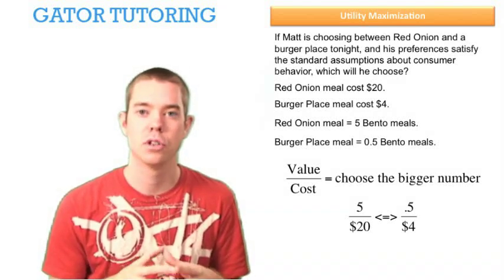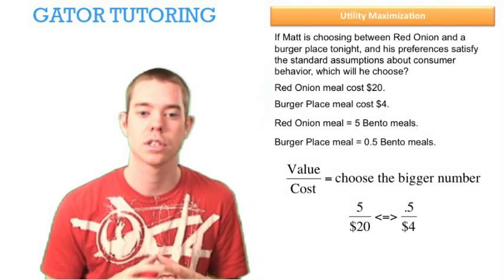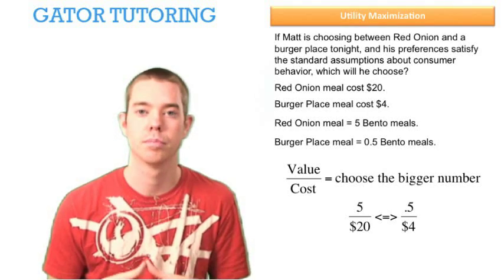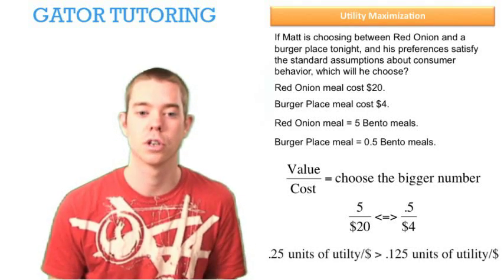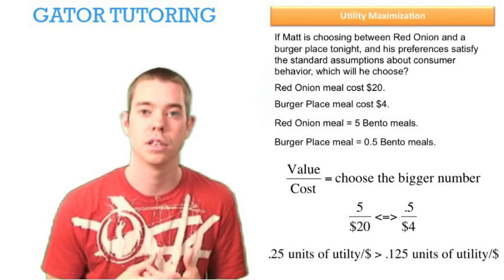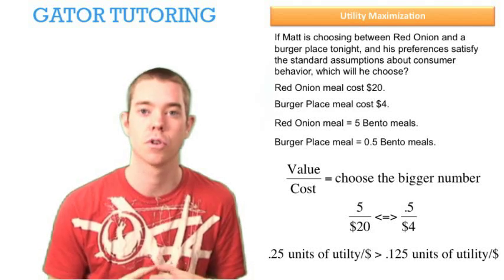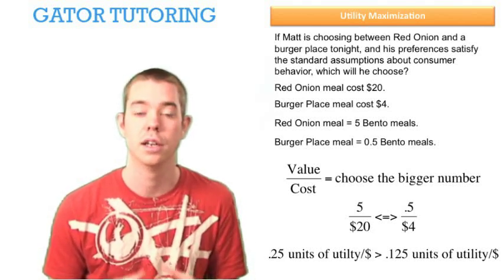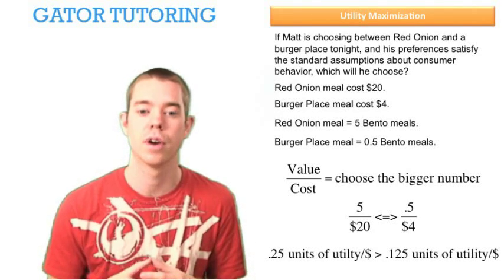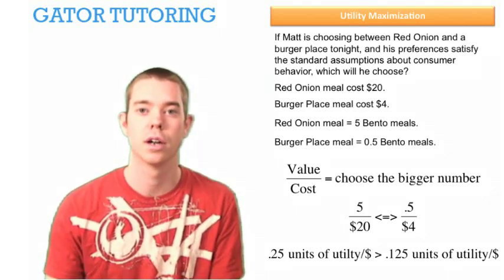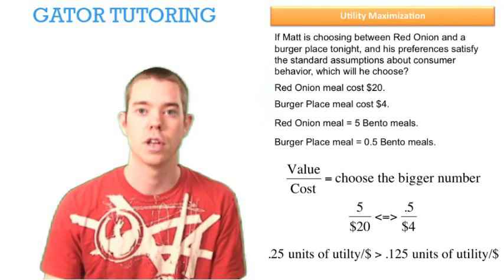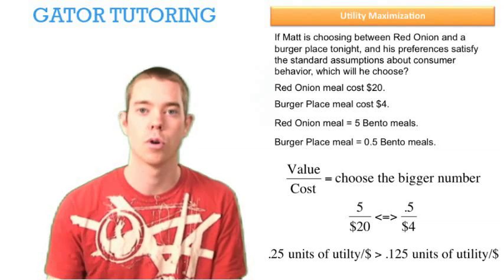So: 5 units of utility divided by $20 — is that less than, equal to, or greater than 0.5 units of utility divided by $4? It's no surprise we're choosing the Red Onion again. We get 0.25 units of utility per dollar spent, which is greater than 0.125 units of utility per dollar at the Burger Place. In both cases, we choose the Red Onion — just make sure you understand what each form means.